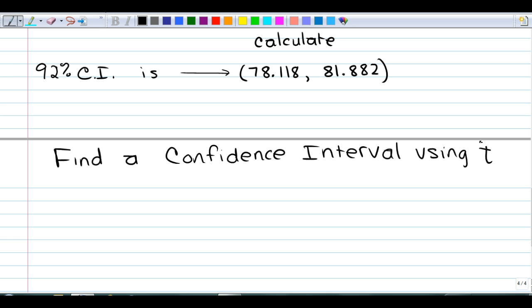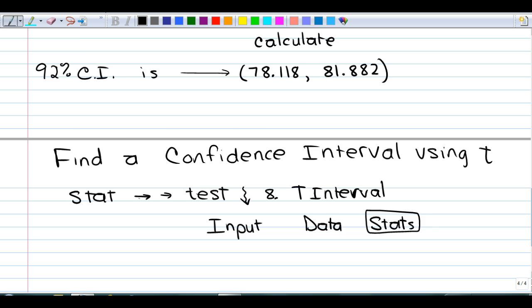So again, we press stat, we arrow over to tests, we go down to choice 8, t-interval. And again, we have our choice of having input as data or statistics. Since I didn't have us enter anything in our list, we'll use statistics again.